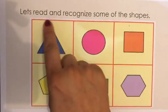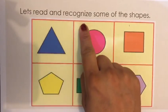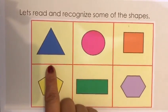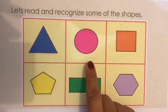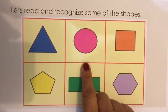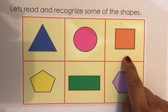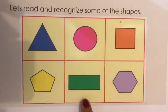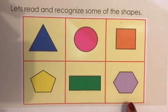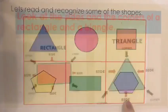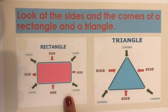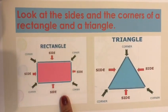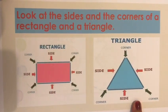Let's read and recognize some of the shapes: Triangle, Circle, Square, Pentagon, Rectangle, Hexagon. Here I have two shapes for you: Rectangle, Triangle.